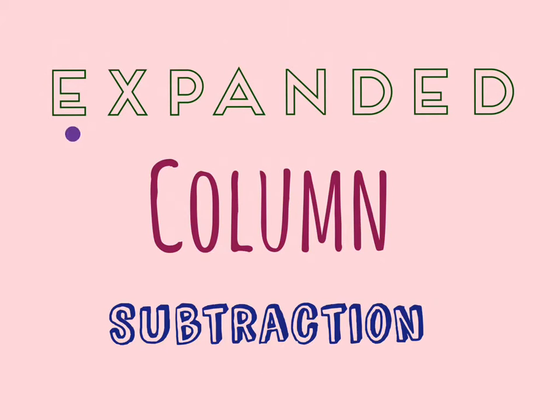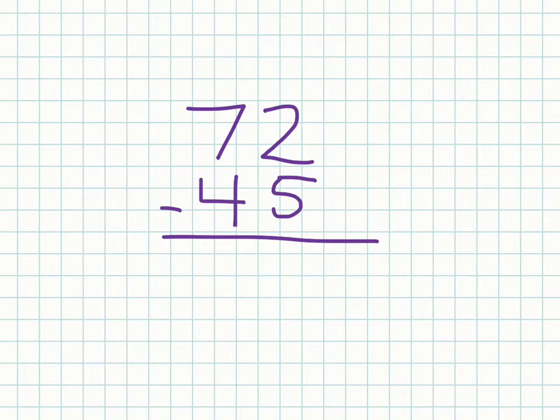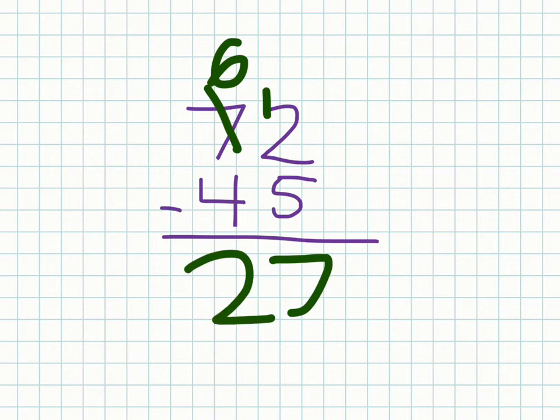Let's learn something called expanded column subtraction. Before we start, the word 'expand' means to make something bigger. Let's look at how most people subtract when they have two or three digit numbers. Most people just quickly go like this and boom, done really fast.